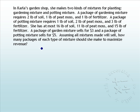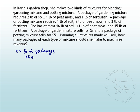The first thing to do when reading a word problem is to figure out what your variables should be. To find out, you look at what the question says. It says: how many packages of each type of mixture should she make? We don't know how many packages of each type she should make, so let's let those be our variables. We have two different types of mixtures — gardening and a potting mixture — so we'll let X be the number of packages of gardening mix, and we'll let Y be the number of potting mix packages.